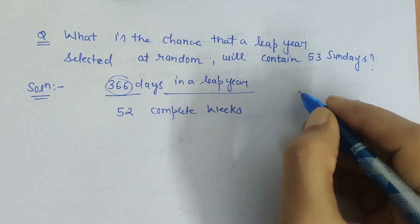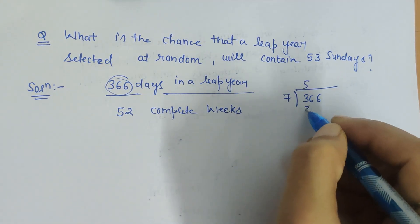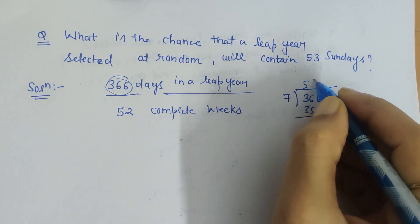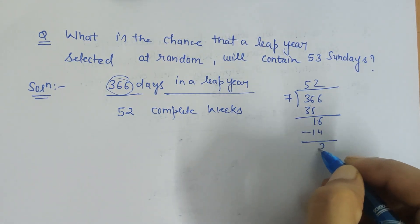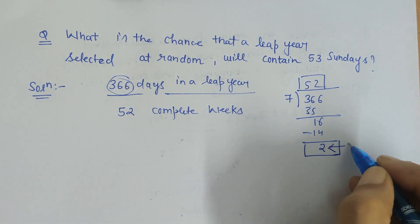If I show the division: 7 goes into 36 five times (35), then into 16 twice (14), and the remainder is 2. What does this mean? It means there are 52 complete weeks and 2 extra days.